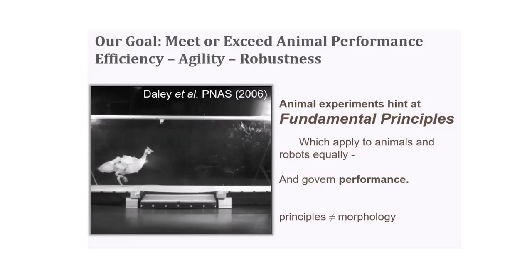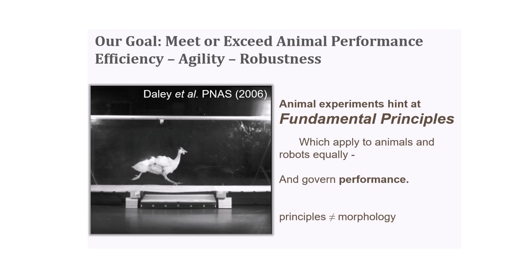In this animal experiment you see here, the bird has no idea that this dip in the ground is coming. It has run down this runway 100 times with tissue paper over a flat surface, and it expects to just run right on down. This hole is about 40% the length of the leg — that's a really big dip — and it just doesn't slow the animal down very much. We really want to understand how they do this.